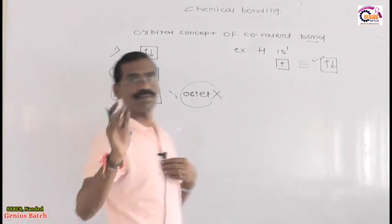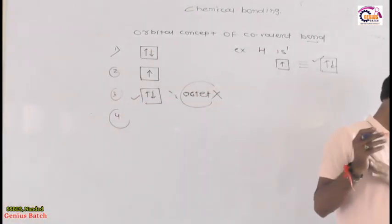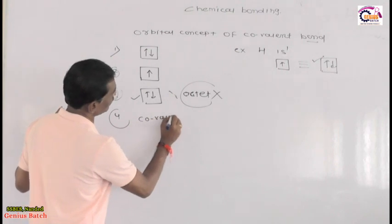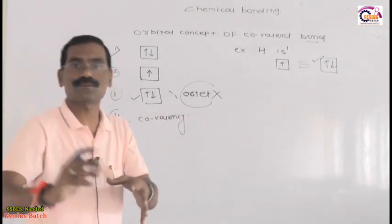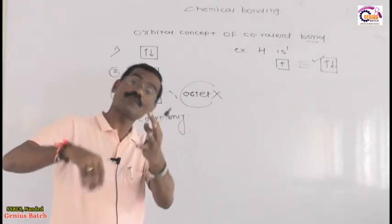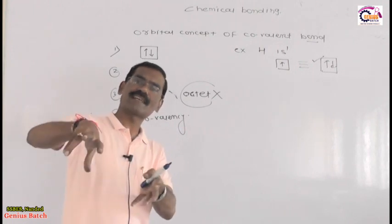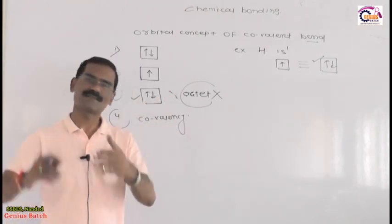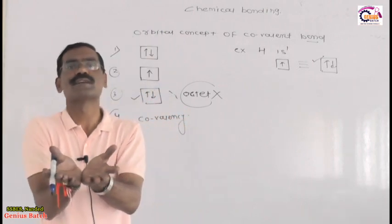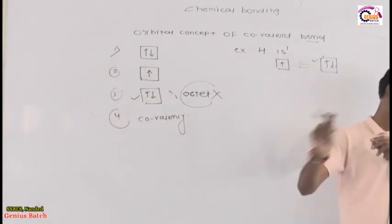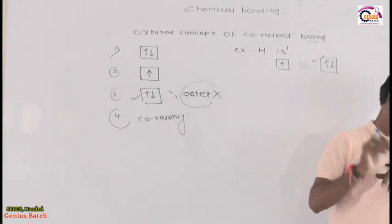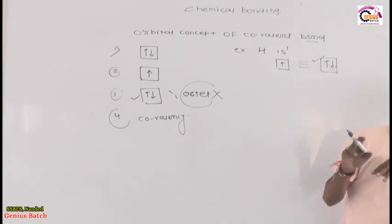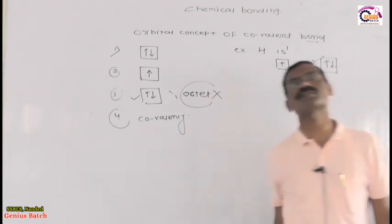Fourth point — covalency. Covalency means how many electrons a particular element shares, or contributes, to achieve noble gas configuration. The number of electrons contributed by an atom of the element for sharing with another atom to achieve noble gas configuration is called covalency. For example, valency tells us how many covalent bonds an element will form.